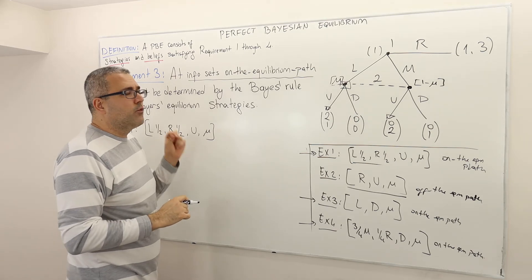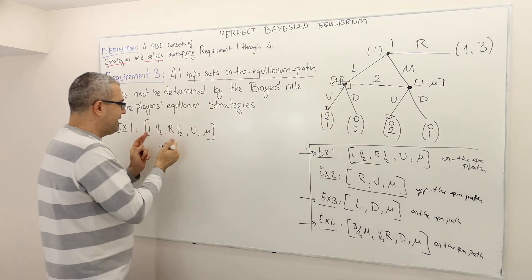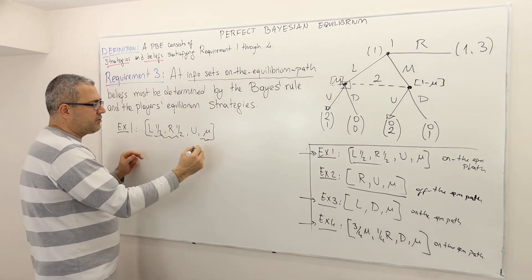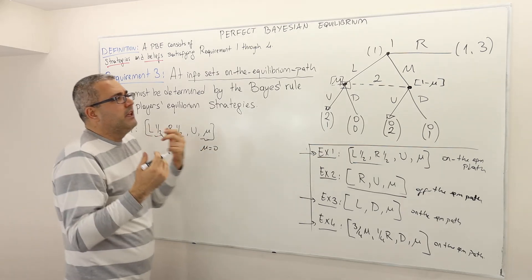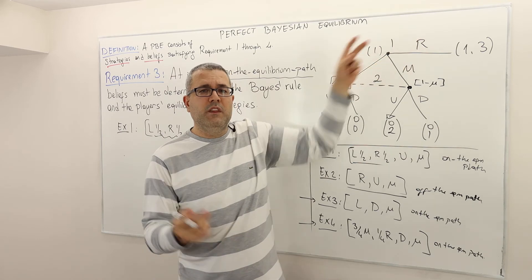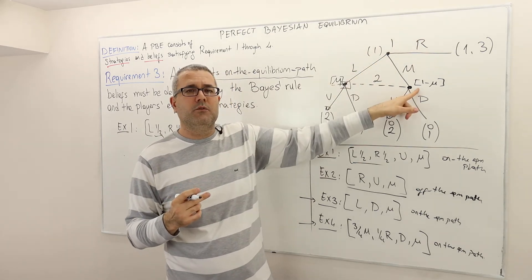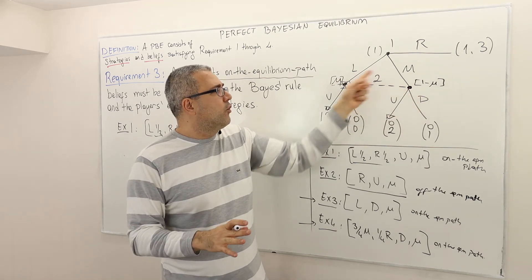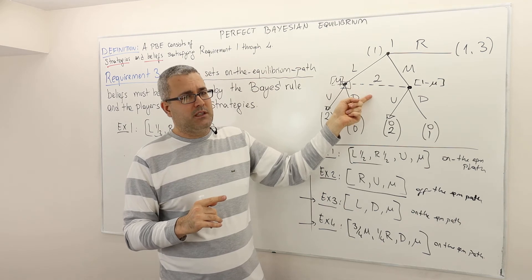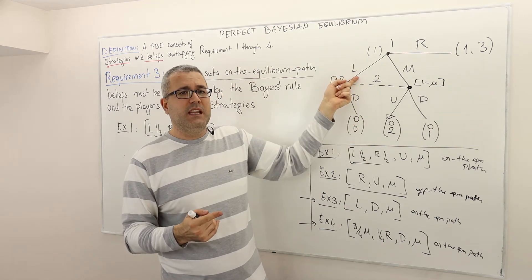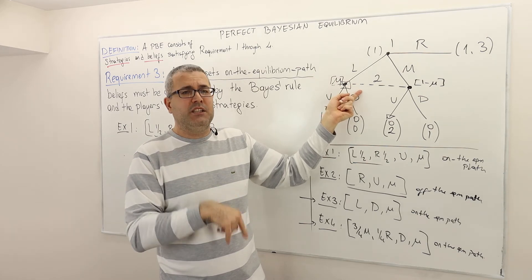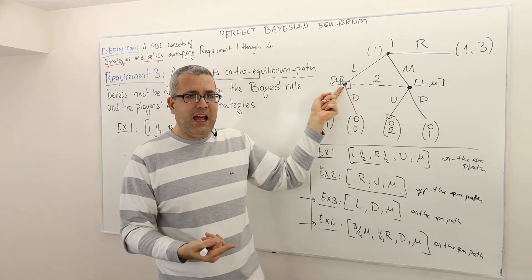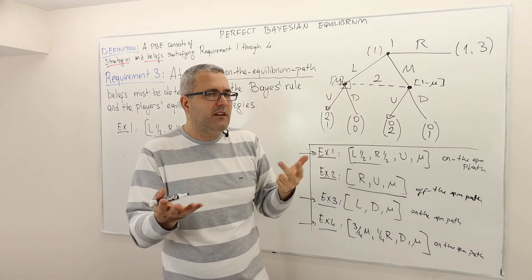The question is: for what values of mu are these beliefs consistent? Can we have mu equals zero again — believing my opponent plays left or right with equal probabilities but believing I'm at this specific decision node? That doesn't sound consistent. There's only one way you can end up at this information set, which is if player one actually plays left. So if you are in this decision node, it's not because player one played M — it should be because player one played L. So mu has to be one.